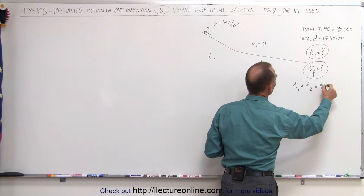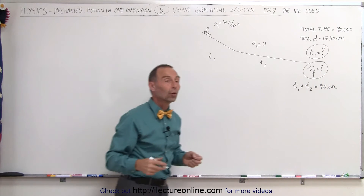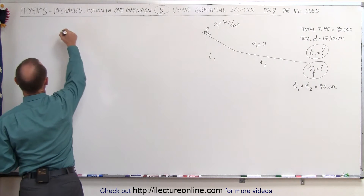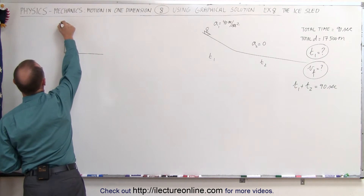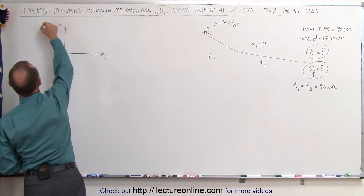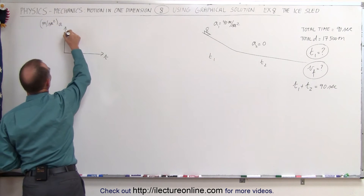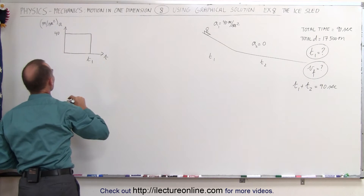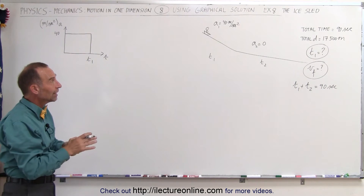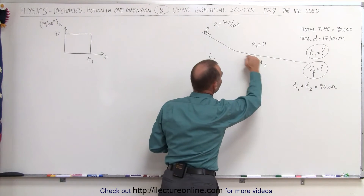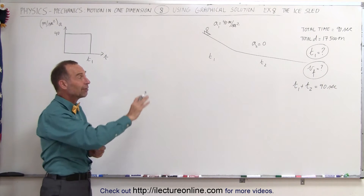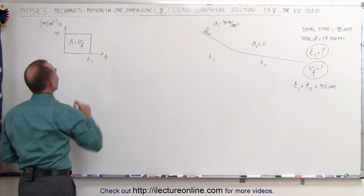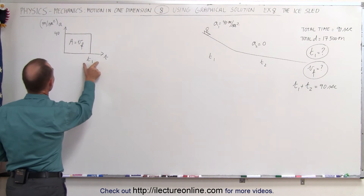So t1 plus t2 equals 90 seconds. And of course, what is the velocity that the sled will reach? We'll start with an acceleration versus time graph. The acceleration axis is in meters per second squared, and it's 40 meters per second squared for an unknown amount of time t1. The area underneath that curve is the velocity the sled reaches when we get to the shallower portion of the trip — that will also be the final velocity. So let's call this area equal to the final velocity, which is a product of time times acceleration.